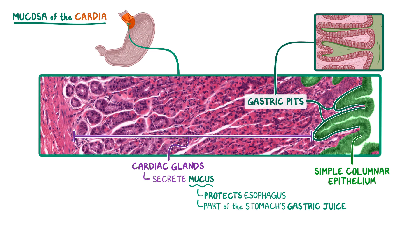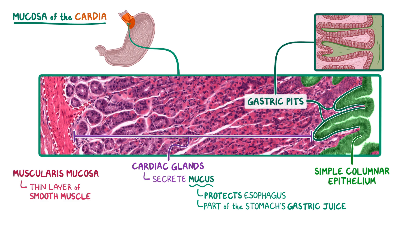The cardiac glands extend all the way to the underlying muscularis mucosa, which is a thin layer of smooth muscle that is still a part of the mucosal layer.